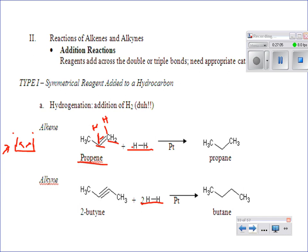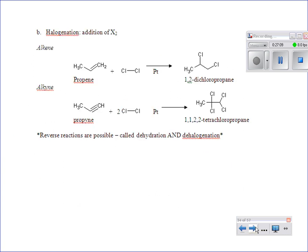Halogenation is the same concept but instead of H and H, we add Cl and Cl or Br and Br. The double bond opens and we put a Cl on each carbon: propene becomes 1,2-dichloropropane. Adding one mole of Cl₂ to a propyne gives 1,2-dichloropropene; adding a second mole fully saturates it to 1,1,2,2-tetrachloropropane.